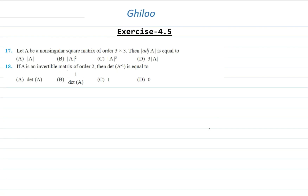Welcome again. This is the concluding video of exercise 4.5, where I'll be discussing the last two objective questions, that is questions 17 and 18. These are important questions in the sense that the approach will be different. Let us start with question number 17: A is a non-singular square matrix of order 3 by 3, then adjoint of A is equal to?